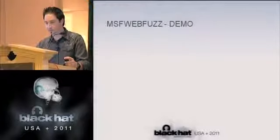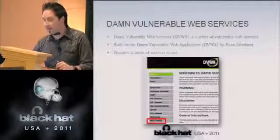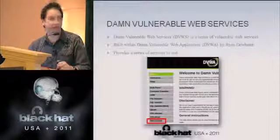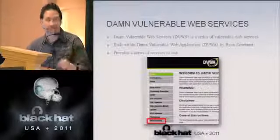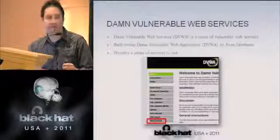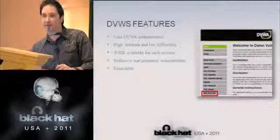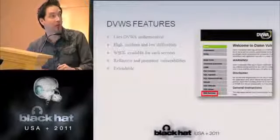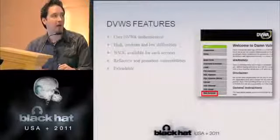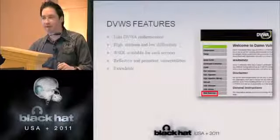We mentioned earlier the vulnerable web services that Kevin Johnson created for the Damn Vulnerable Web Application by Ryan Dewhurst. If you haven't checked out this project, I highly recommend it. Either go to his website and download it, or play with it in the Samurai Web Testing Framework — a live CD that has all of this configured, just boot it up, put it into a VM, and everything's ready. Kevin's web services provide a series of different services to test with lots of different attack vectors, using authentication backends from Damn Vulnerable Web App.